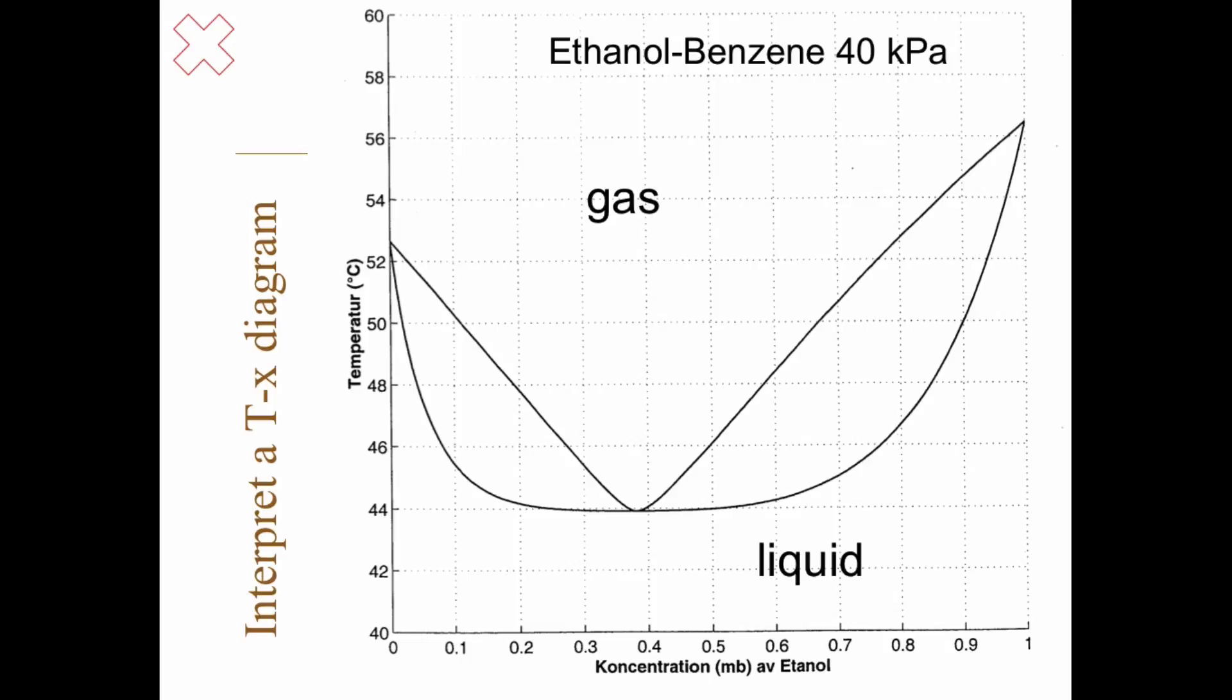Okay, so we start with the case where we have a condensing gas, 15 mole percent ethanol. So we start up there, go straight down to the dew point curve, and make a horizontal line, constant temperature, and find a point on the boiling curve. And that's the composition of the liquid.